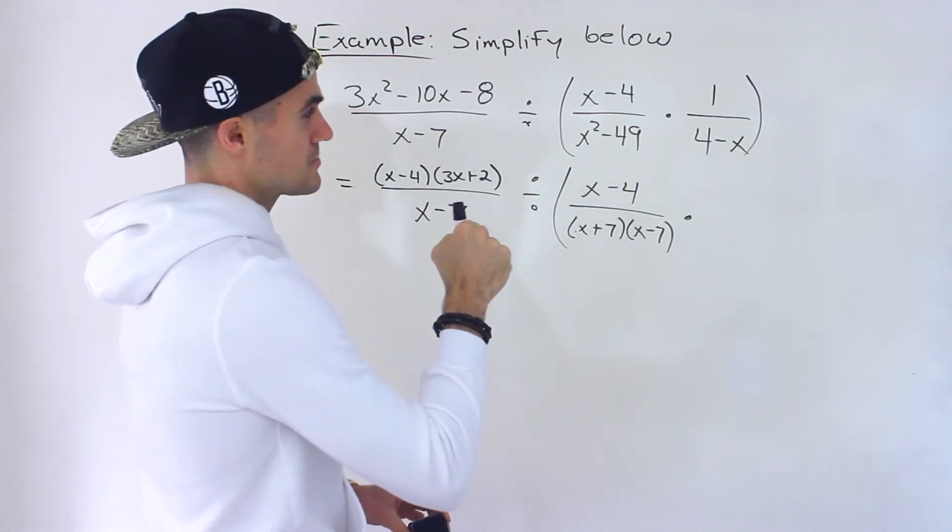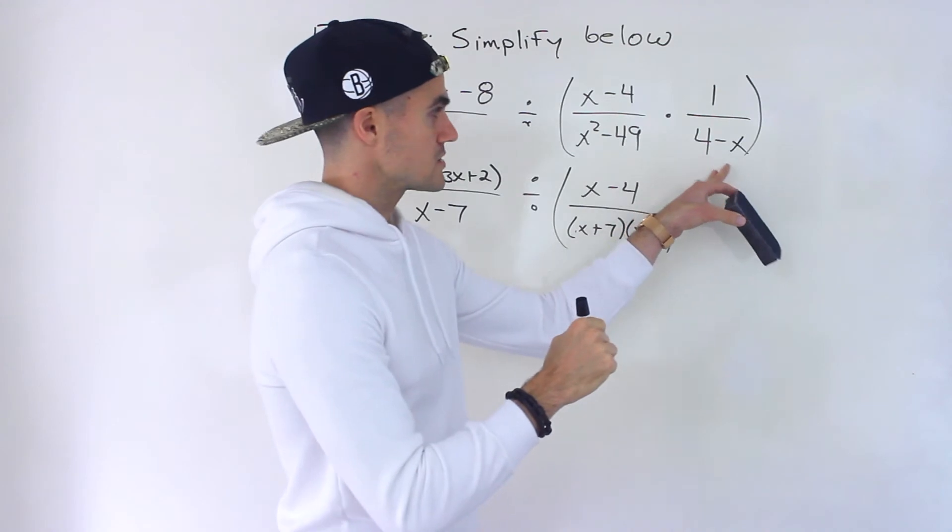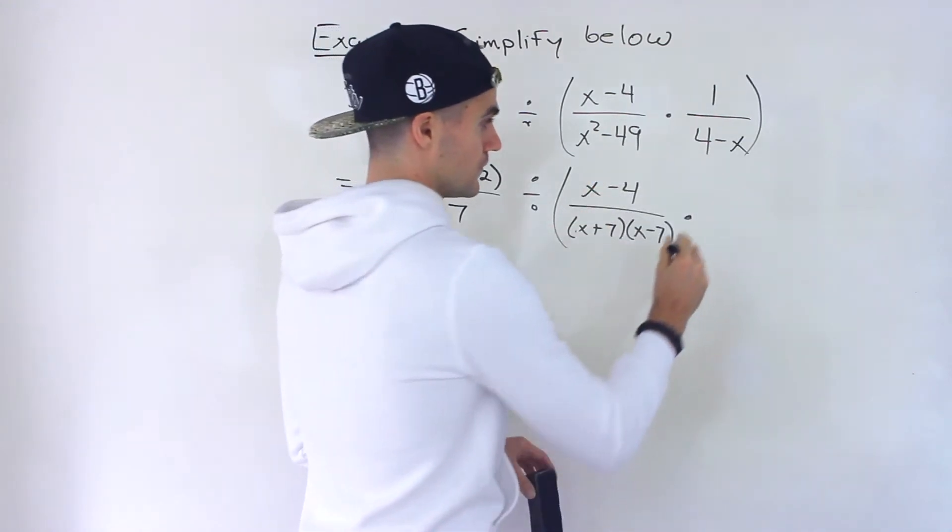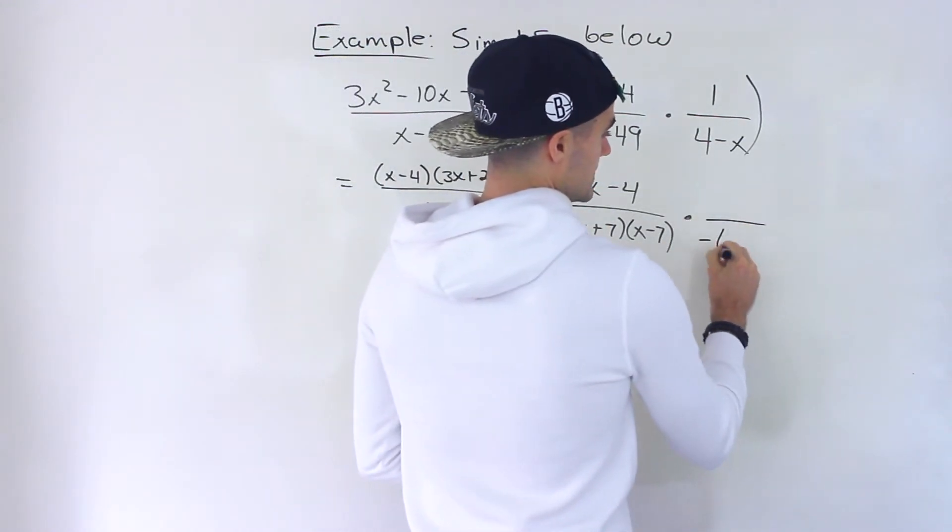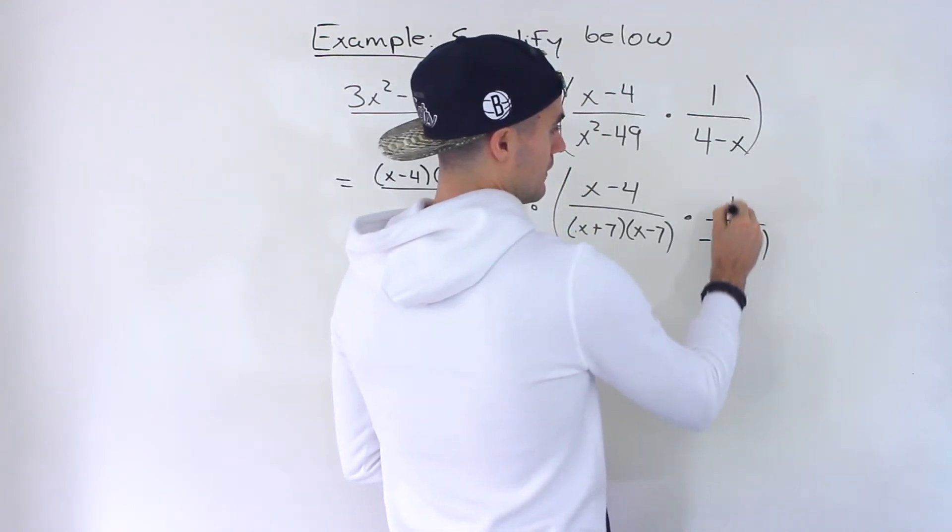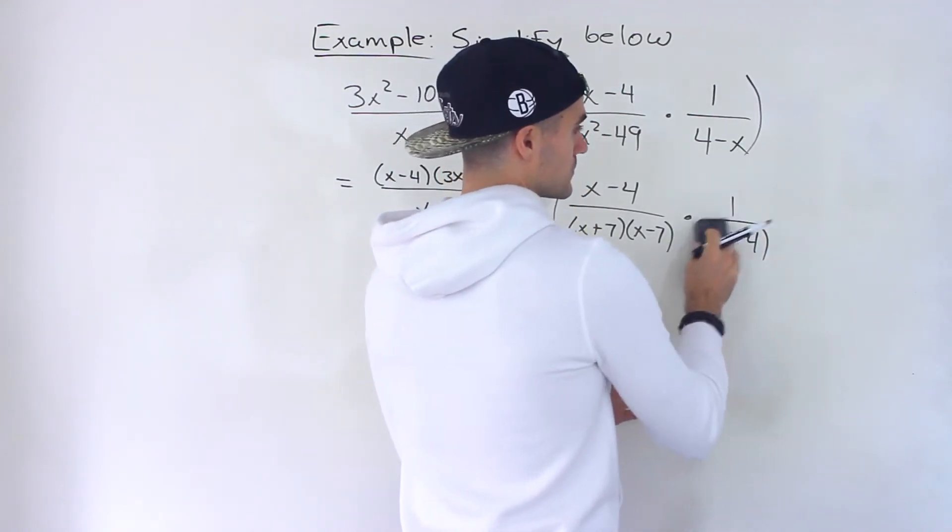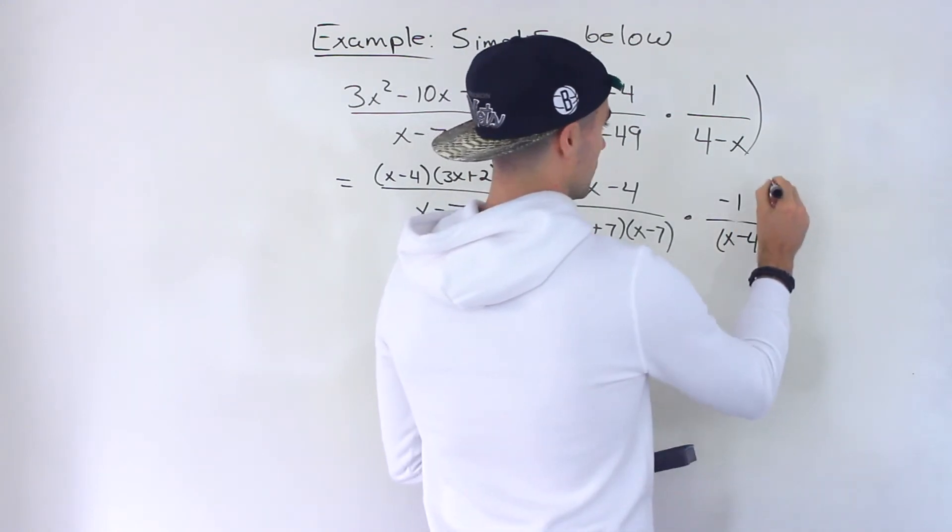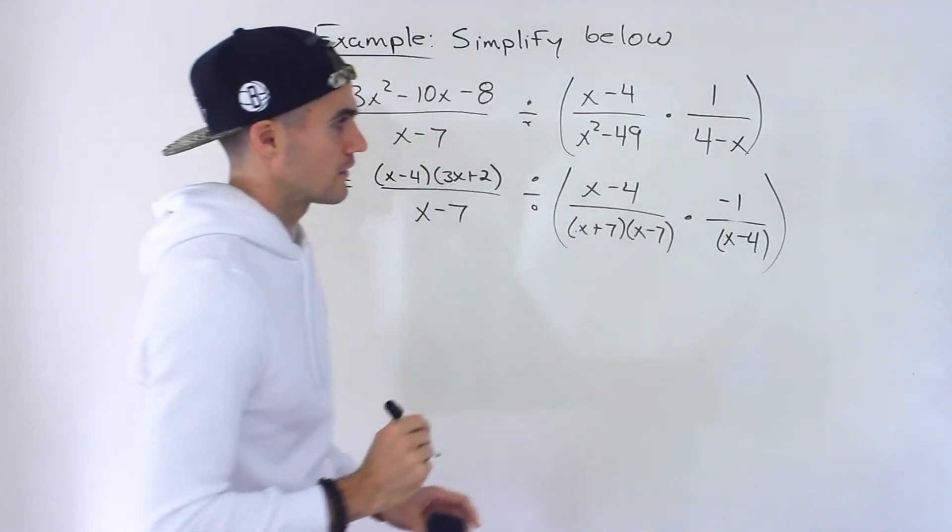And then we're multiplying by 1 over 4 minus x. Now we can leave the 4 minus x. Personally I don't like it in this format so I'll take out a negative to have it as x minus 4 instead. And then this negative maybe we could bring up top. So we'll put a negative 1 up here like that.